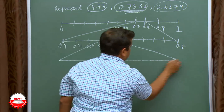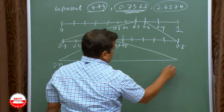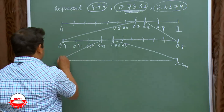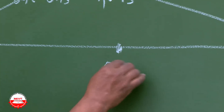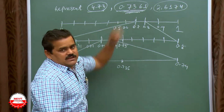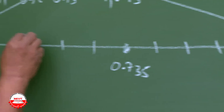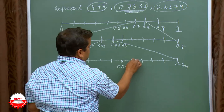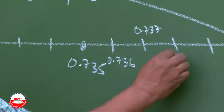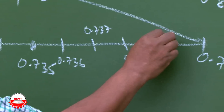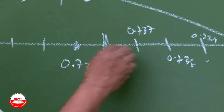So this is 0.73 and this is 0.74. The exact middle is 0.735. You need 0.736, so divide it into 4 equal parts — 4 lines means 5 equal parts: 0.731, 0.732, 0.733, 0.734, 0.735. You need 0.736 means 0.736 and 0.737 — these two you have to magnify.